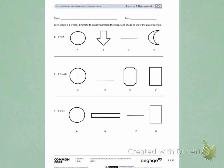This is Module 5, Lesson 4, Homework, Side 1. Today's objective was to represent and identify fractional parts of different holes. Each shape is one hole. Estimate to equally partition the shape and shade to show the given fraction.